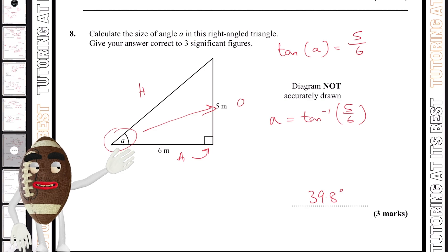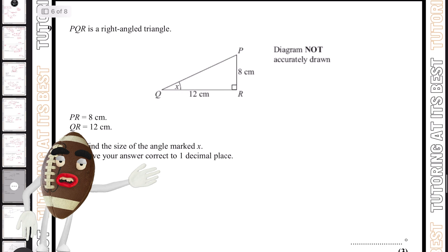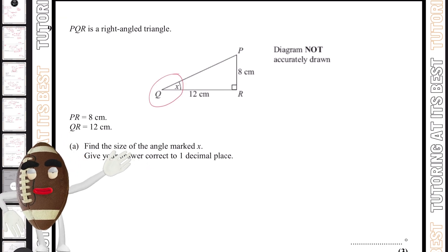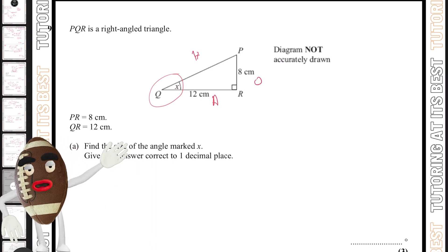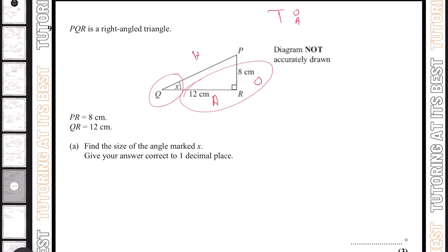Question nine: we're finding the value of x. We'll have our hypotenuse, adjacent, and opposite. It's A and O, so it's TOA. So tan x equals 8 over 12. Tan to the power of minus one of 8 over 12 gives us 33.7 degrees as our x value.